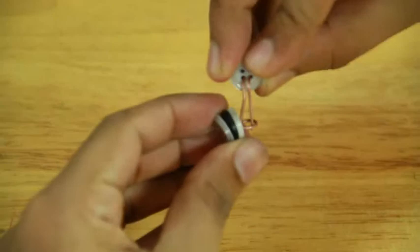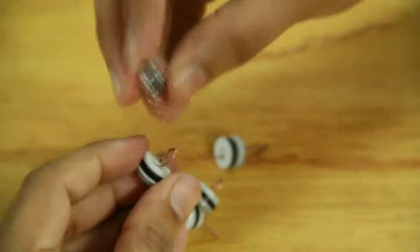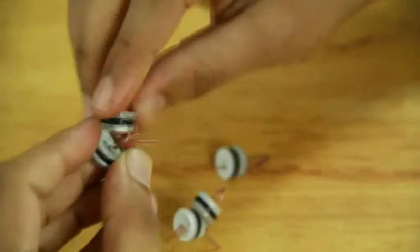Bend the ends of each strip downwards and hook them to each other to form a train. This makes the body of the caterpillar. Once done, press the hook sideways to make it stay in place. Set it aside.